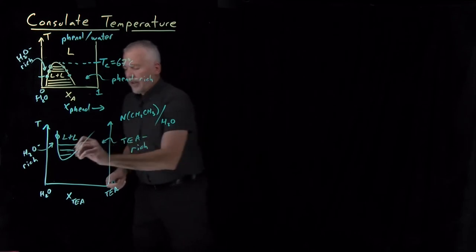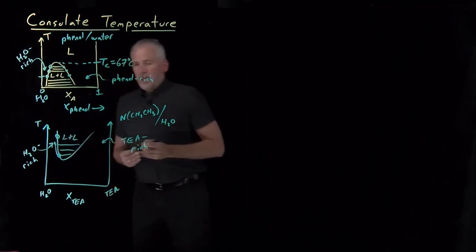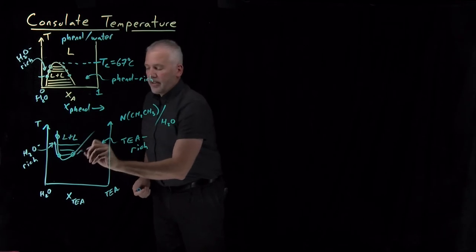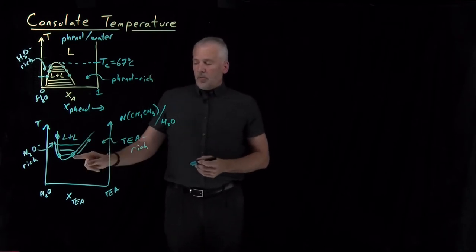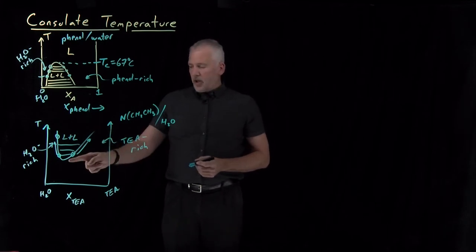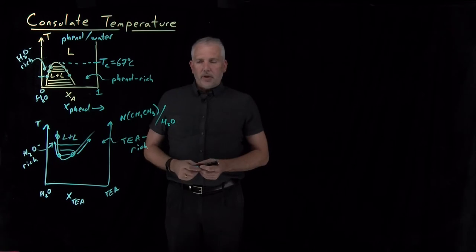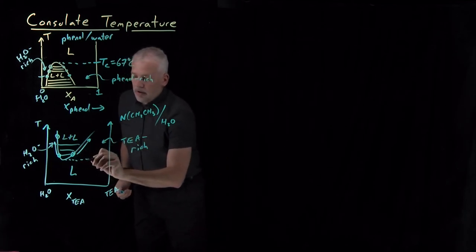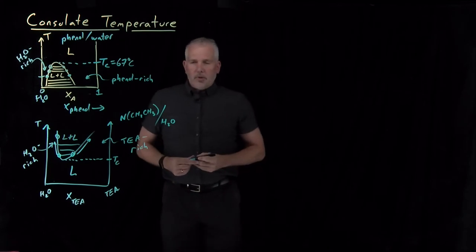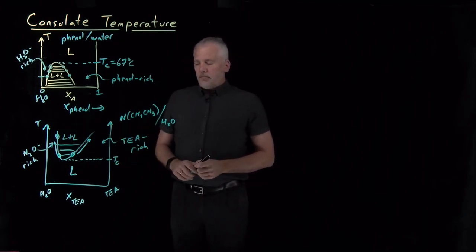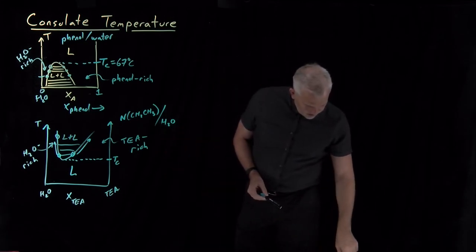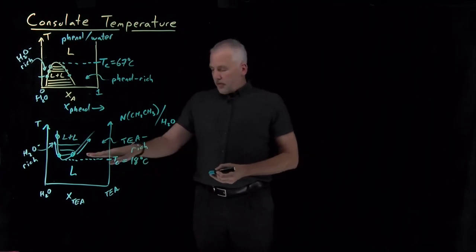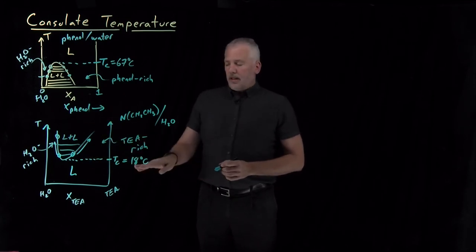That solubility, going from a low temperature up to a high temperature, is actually decreasing — I can put less triethylamine into water as I increase the temperature. Likewise, I can put less and less water into a solution of triethylamine as the temperature increases. This phase diagram is essentially an upside-down version of the phenol-water diagram — I have a single liquid phase that is fully miscible below this special temperature and only partially miscible above it. For triethylamine, that temperature is 18 Celsius: fully miscible below 18 Celsius, partially miscible above 18 Celsius.